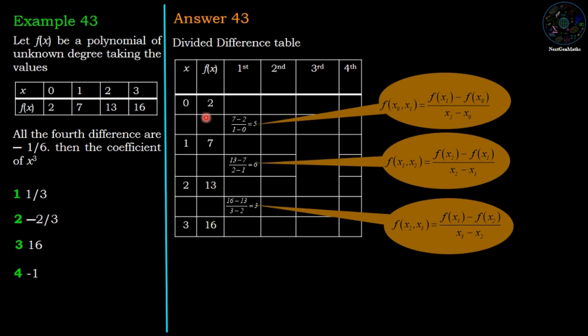Answer. First we are going to prepare the divided difference table. Now the first difference is defined as f(x₀, x₁) equals f(x₁) minus f(x₀) divided by x₁ minus x₀.